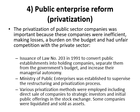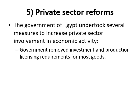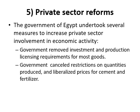Some companies were liquidated and sold as assets. The fifth component is private sector reform. The government removed investment and production licensing requirements for most goods, cancelled restrictions on quantities produced, and liberalized prices for cement and fertilizers.